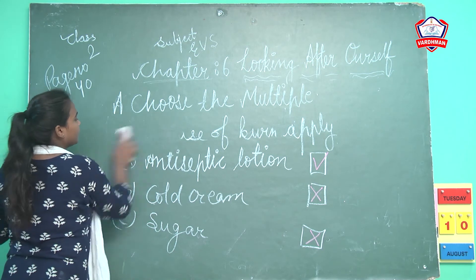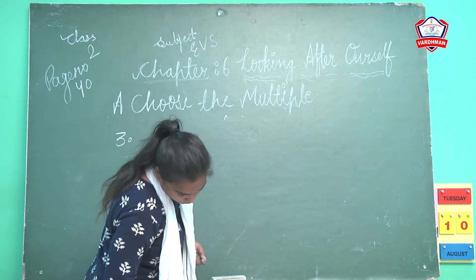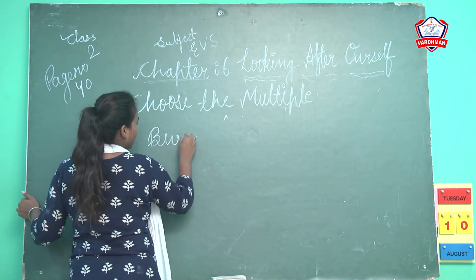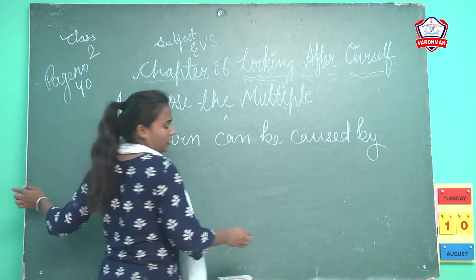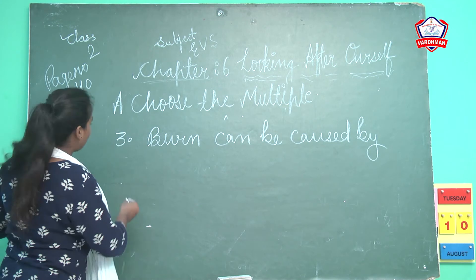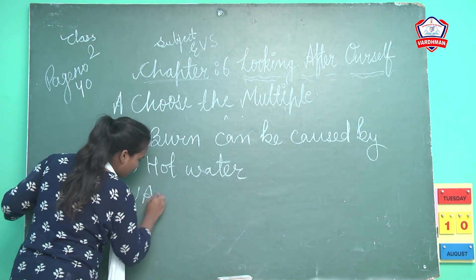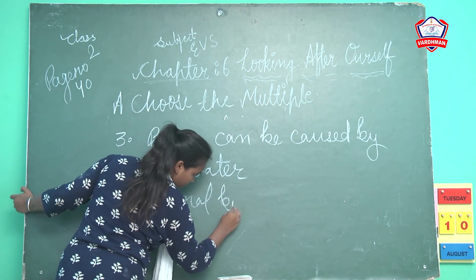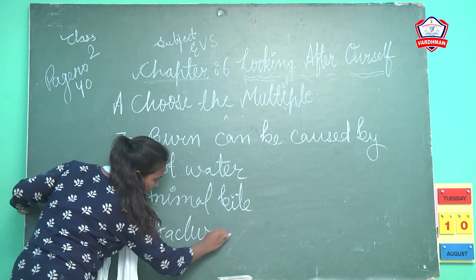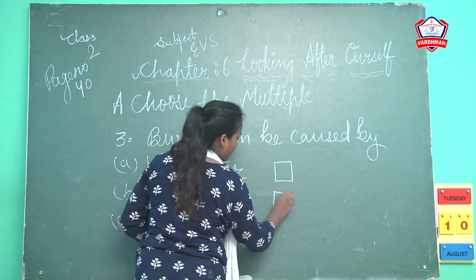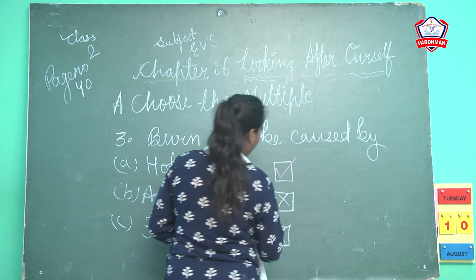The third question: burn can be caused by — A: hot water, B: animal bite, C: fracture. Jalte kisse hain? Hot water se. So hot water is the true answer and the remaining options are false.